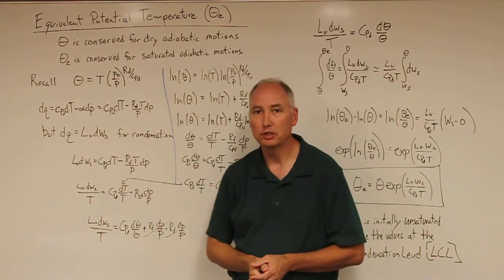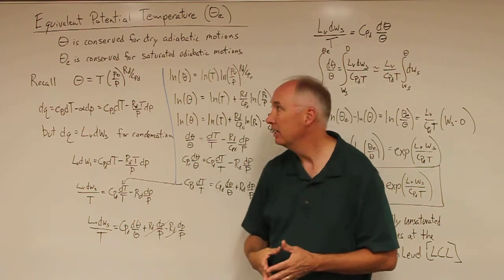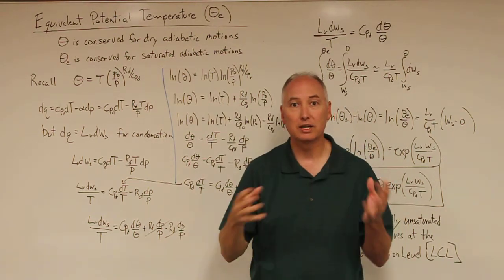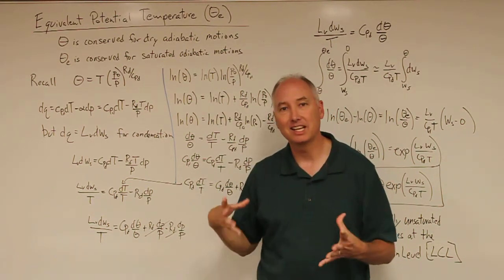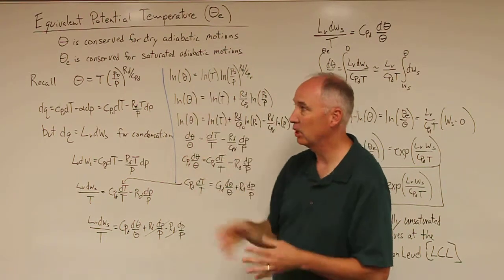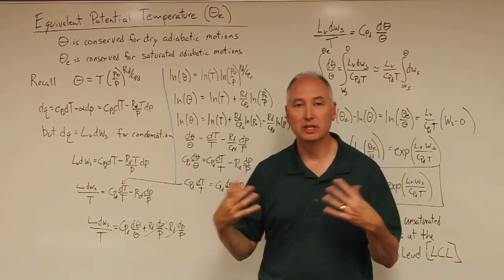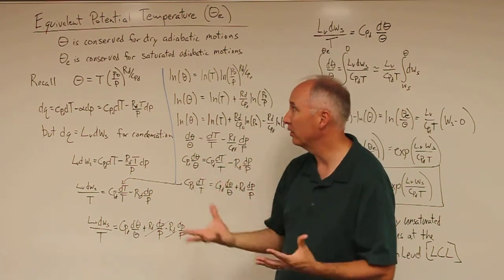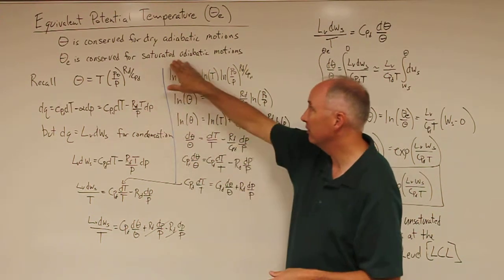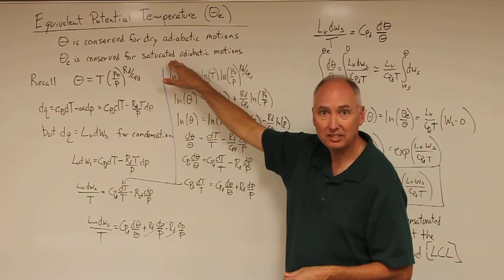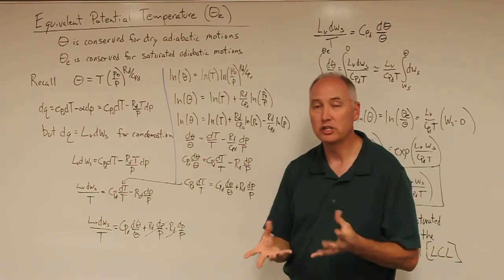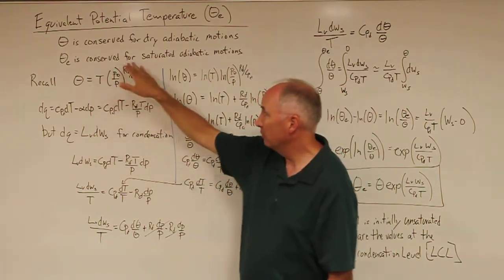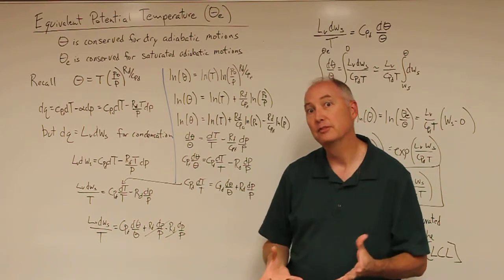For the equivalent potential temperature, we're going to derive an expression that is conserved for saturated adiabatic conditions. Saturated means that the relative humidity is 100%, and we're inside a cloud. The latent heat of vaporization, released when water vapor condenses into liquid water, means this is no longer a purely adiabatic process. We refer to this as a pseudo-adiabatic process, because the energy of that latent heating remains with the saturated air parcel. We'll end up with an expression that is conserved for those conditions.